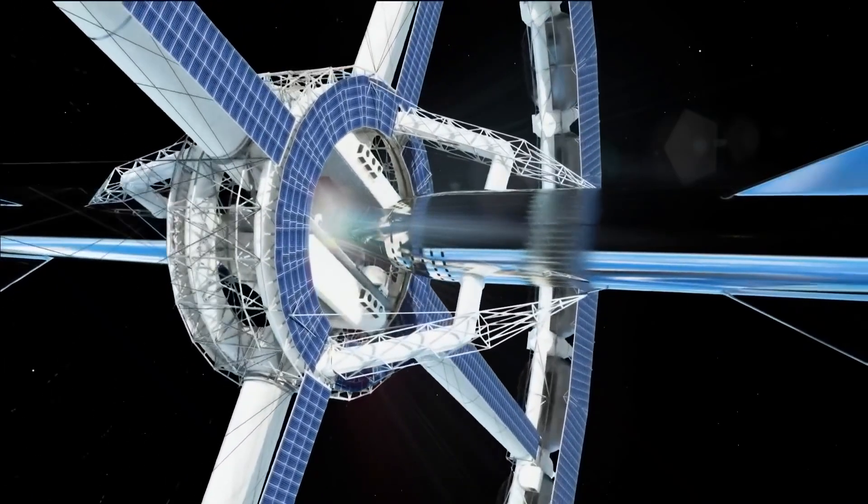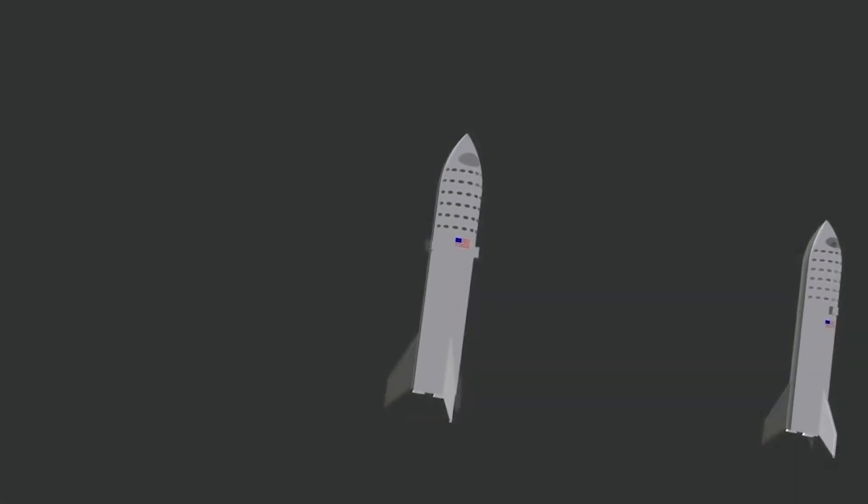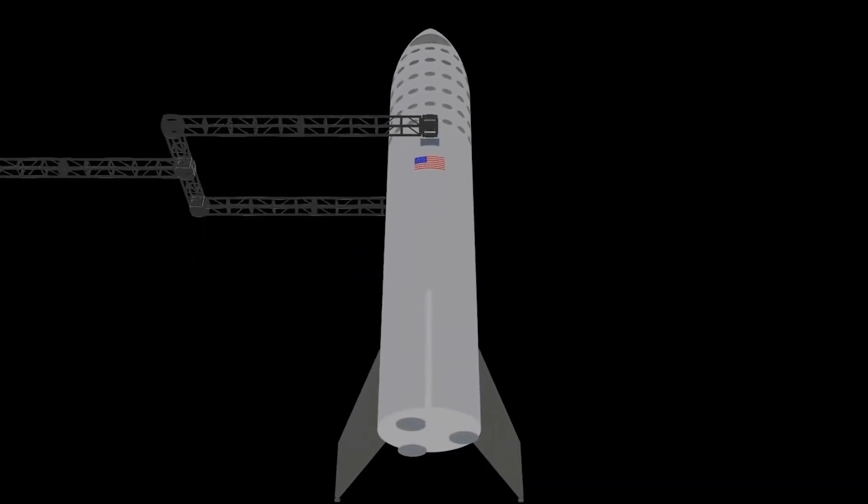After launching, SLS will orbit the Earth twice, firing its engines to build up the speed to push it to the moon. The entire mission will last approximately 21 days.